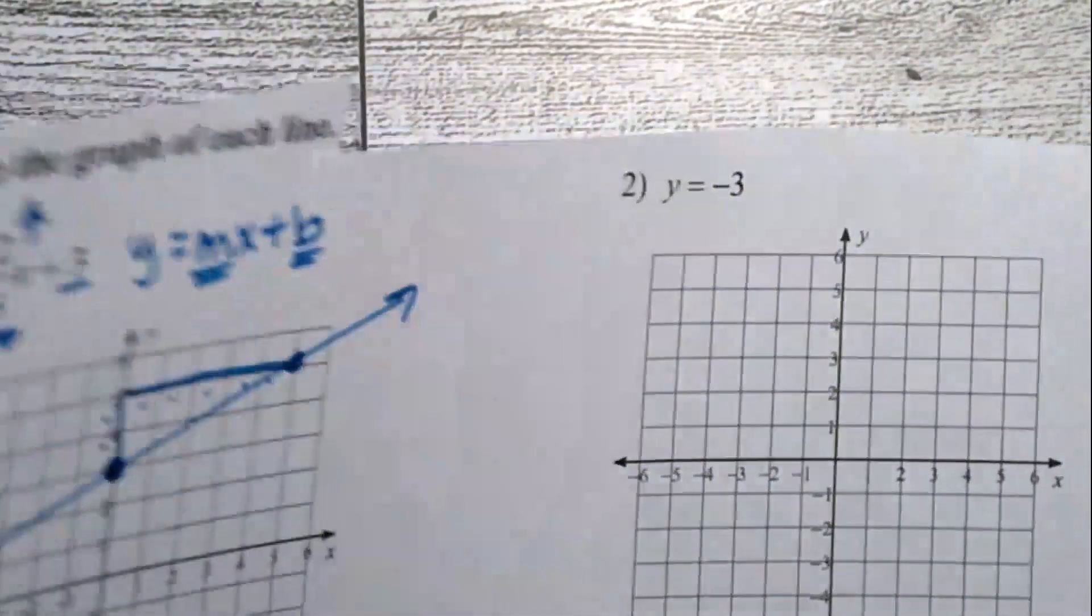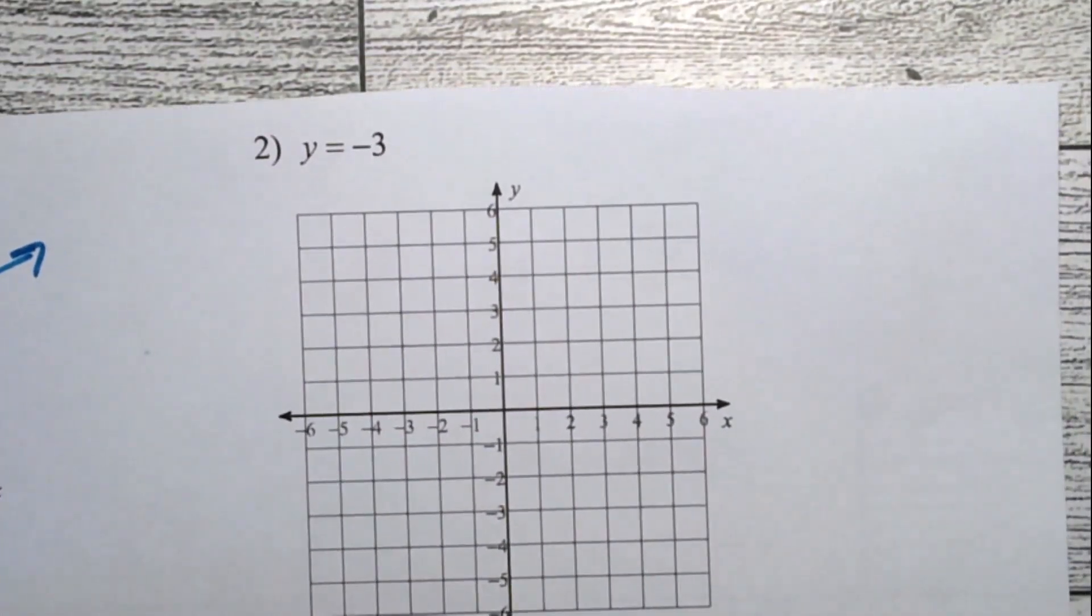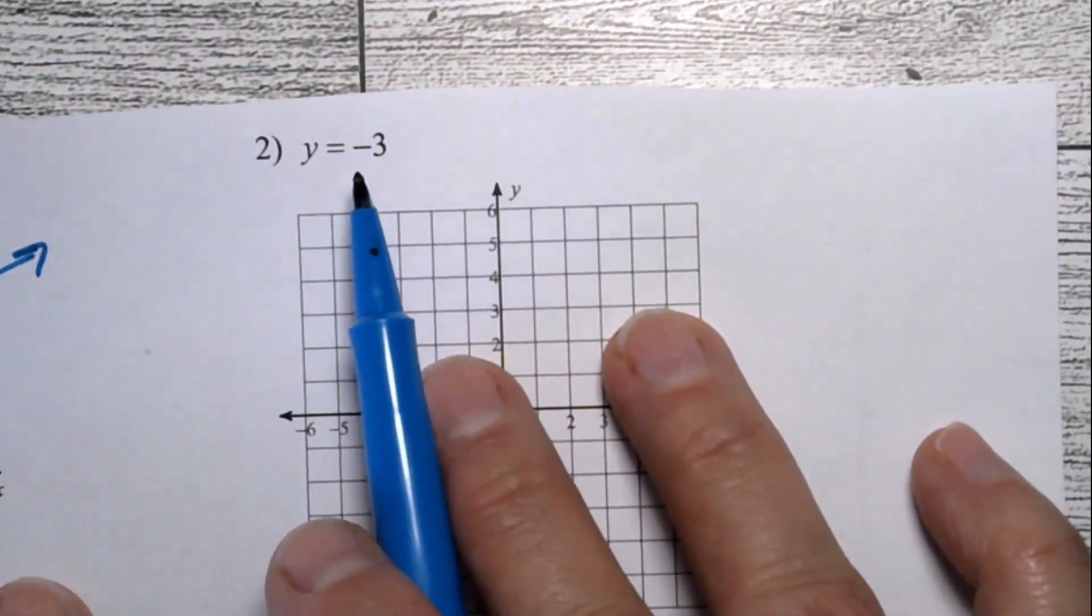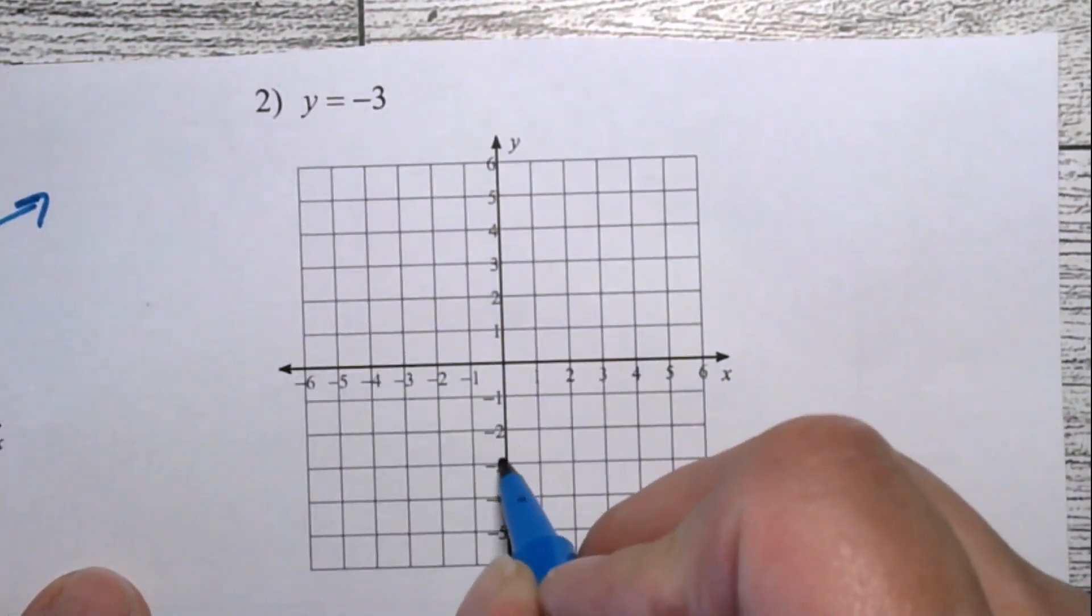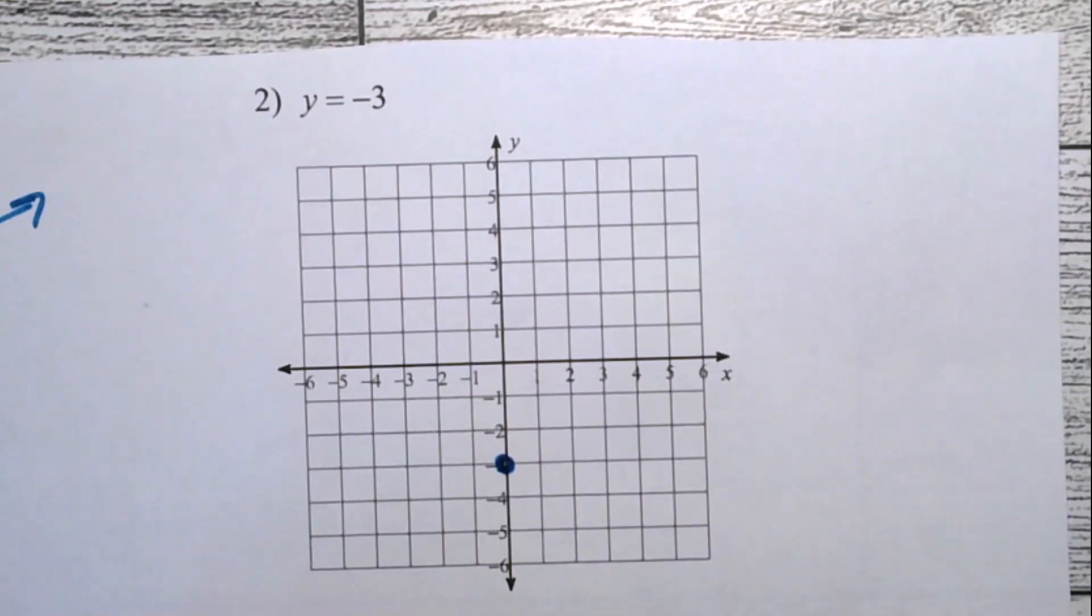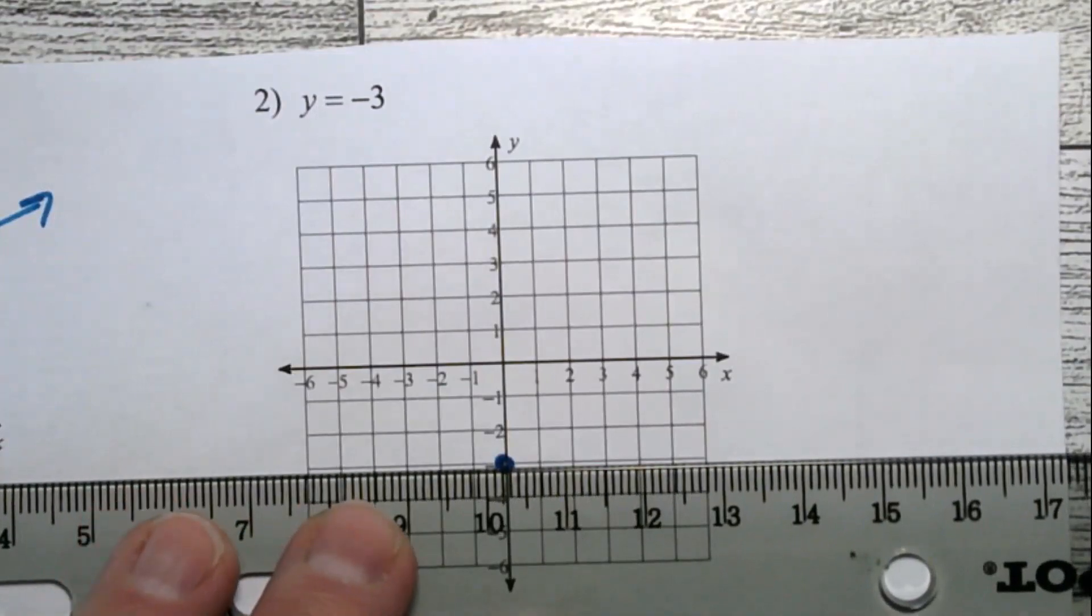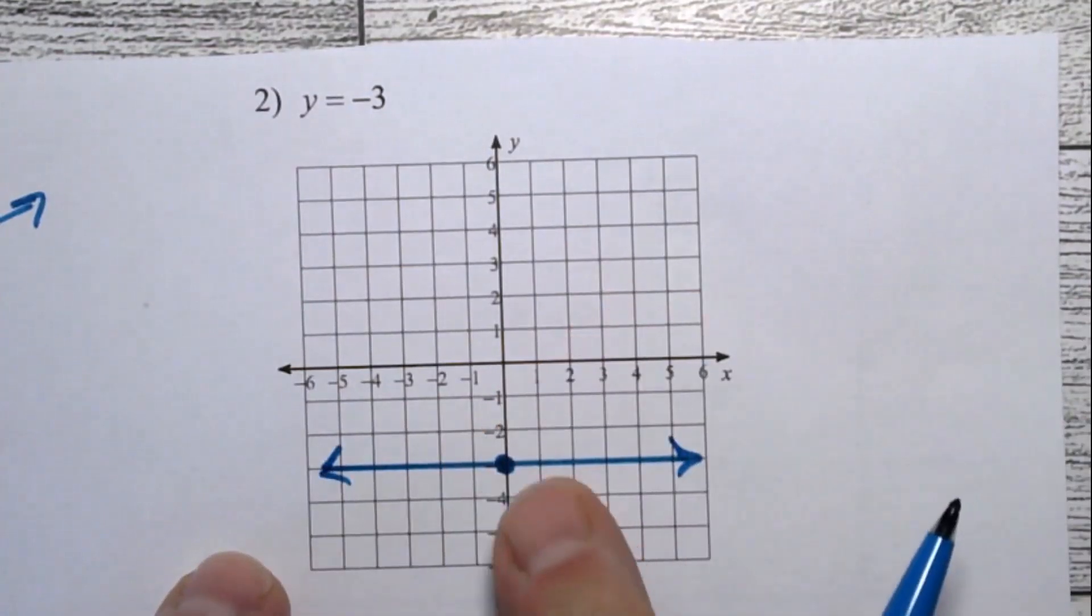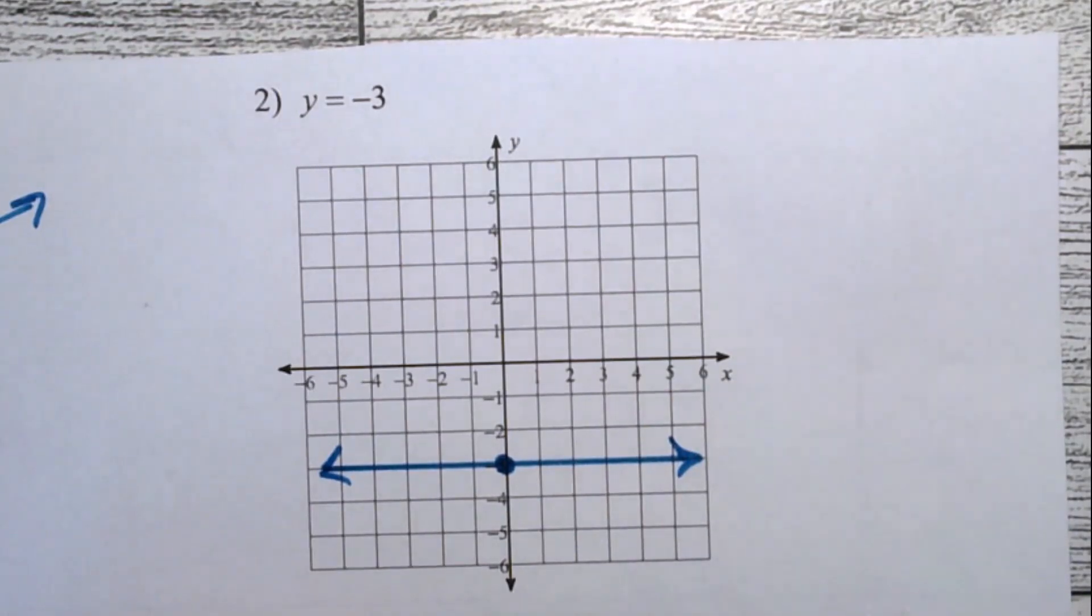Problem number two. All right, this is a little bit different. This is one of those horizontal or vertical lines. This is a line, it's not an answer, but it does say y equals negative three. That means the y-intercept is negative three. And since there is nothing else to go off of here, this is going to be a horizontal line that goes through that point. If you want some more information on how to graph these, I'll put a link up in the corner here so you can see us graphing horizontal and vertical lines.